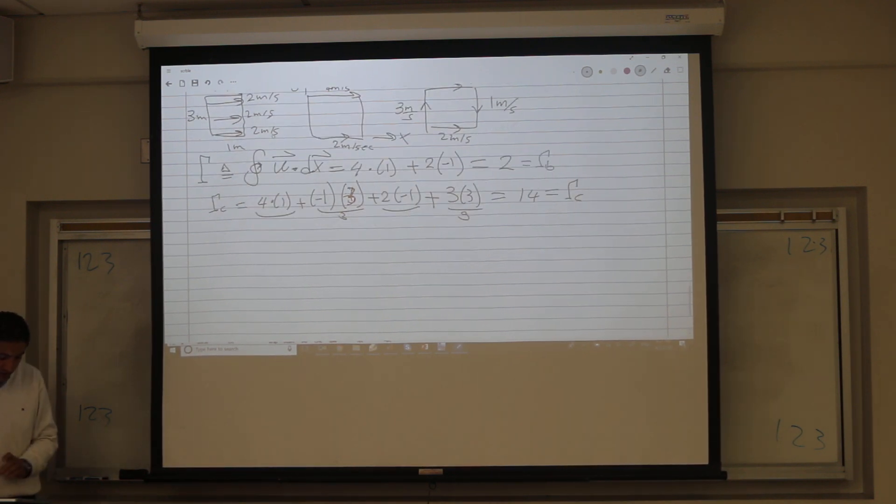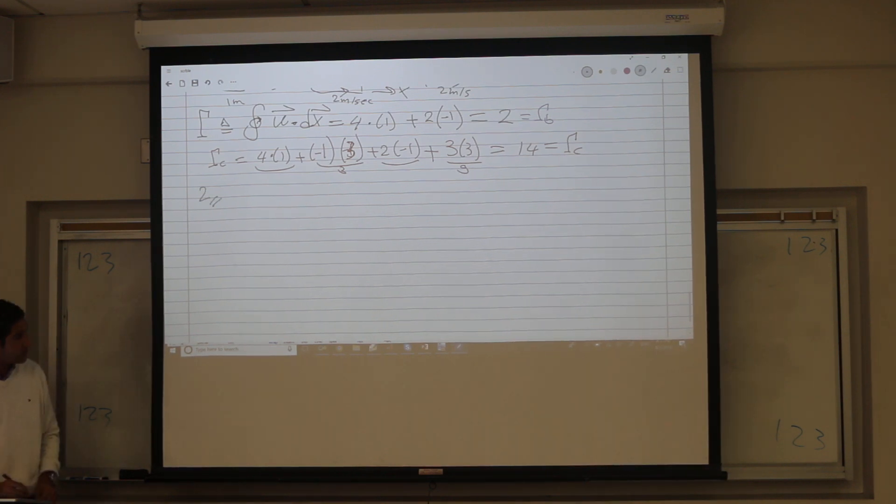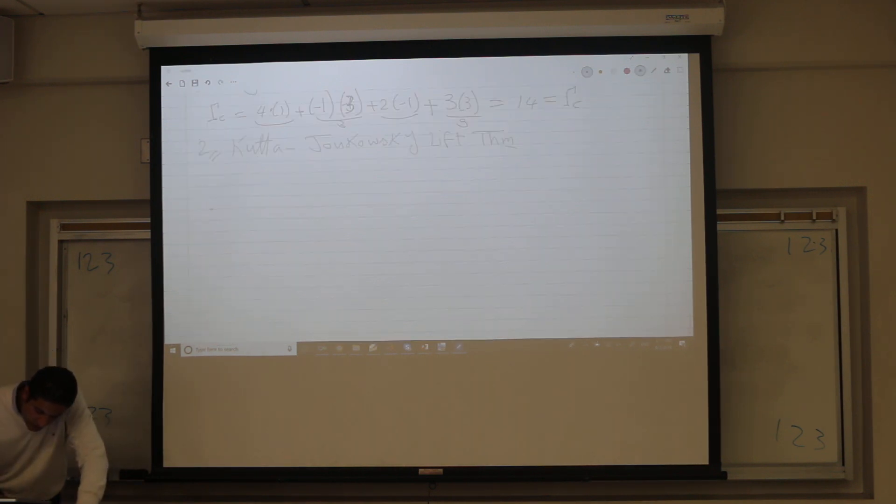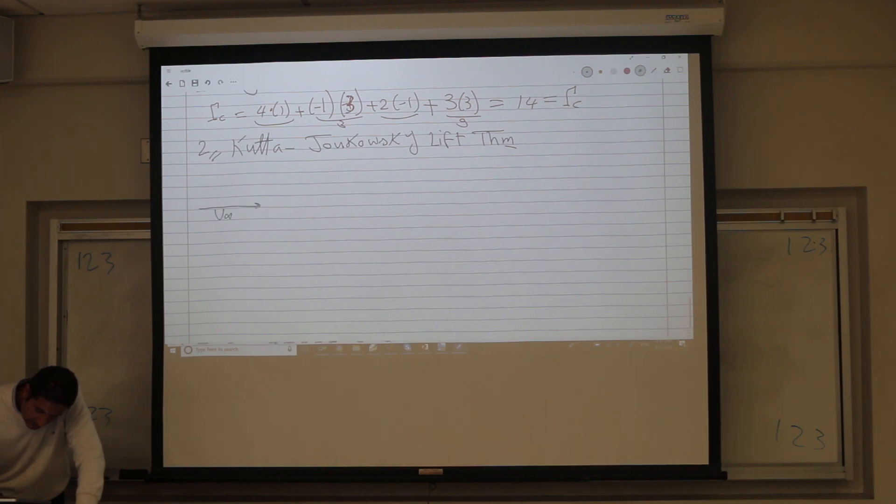Now we will immediately know why this is important because of the lift. The Kutta-Joukowski theorem, early nineteen hundred, 1904-1906 I guess, by Kutta and Zhukovsky. So I have my u infinity, my flow field, and I have my flat plate. This is a flat plate at some angle of attack. It will generate lift, upward lift.